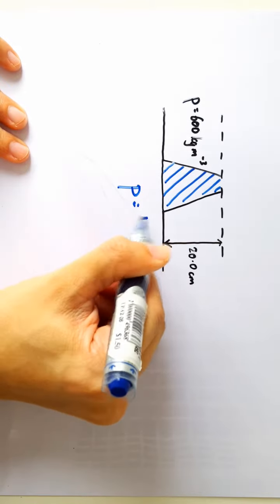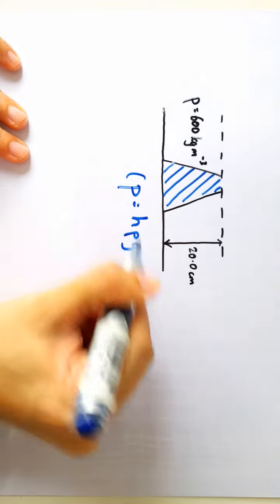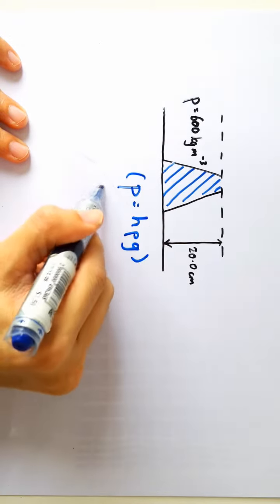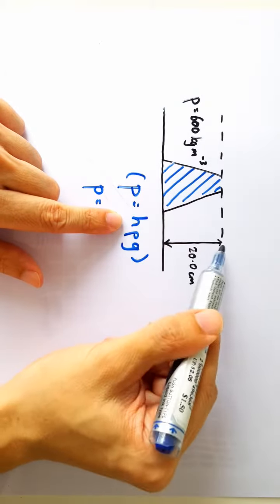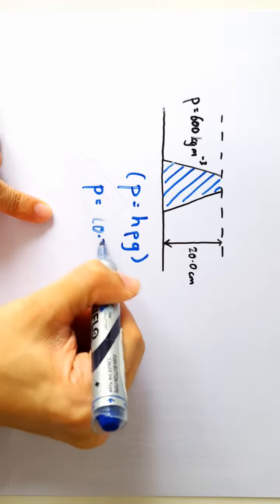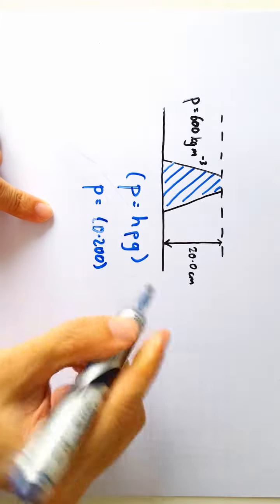Fluid pressure is given by this formula Hrg. So fluid pressure is, H is the vertical depth, so the vertical depth is 20 cm converted to meters will be 0.2.